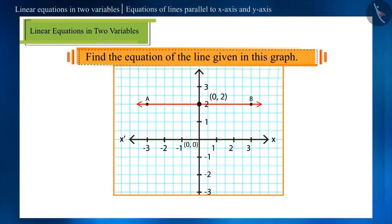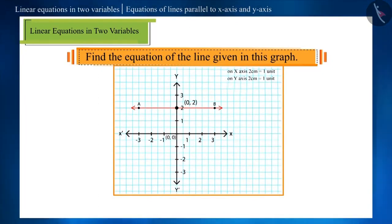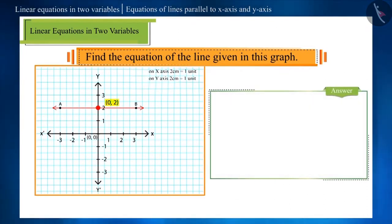Here, only the x-coordinate is changing and the line intersects the y-axis at a point. Hence, the equation of the line AB is y equals 2.